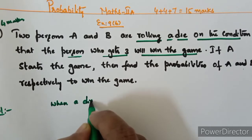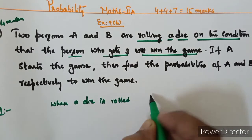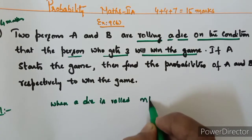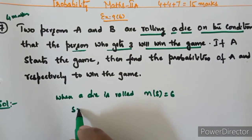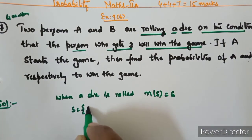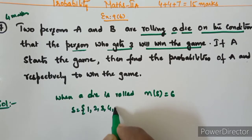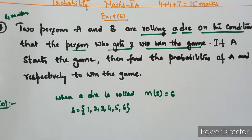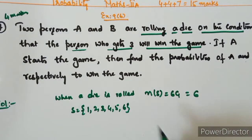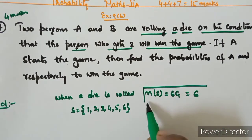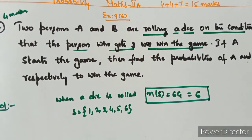When a die is rolled, n of S is equal to 6, because the possible outcomes are 1, 2, 3, 4, 5, 6. So n of S is equal to 6.